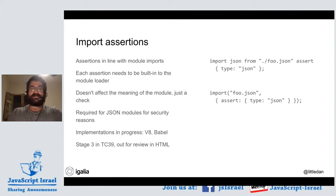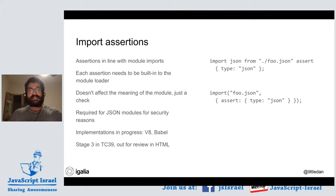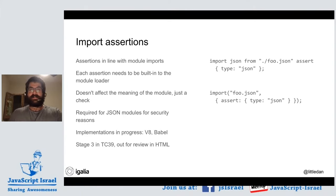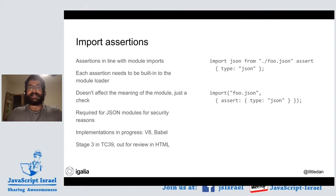In addition to JSON modules, expect to see CSS and HTML modules coming. CSS modules let you import a stylesheet which you can then apply to a shadow root for scoped CSS manipulation. And HTML modules may work for templating in a way that's built into the browser — templated components — though there's a bit more design work needed there.